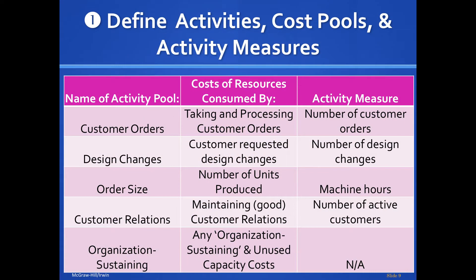Not every company has exactly the same activity pools. For our battery company example, which produces a couple of different kinds of batteries, one activity pool is customer orders — how resources are used in taking orders, measured by how many orders were taken. Think of it like an auto parts store that manufactures a standard battery and a generic store-specific one.